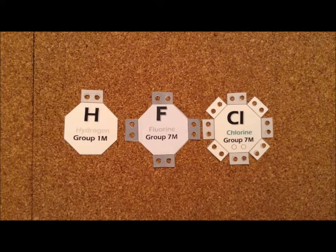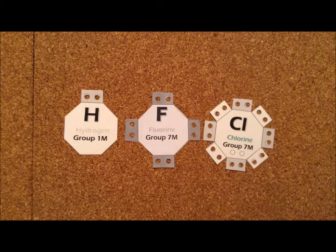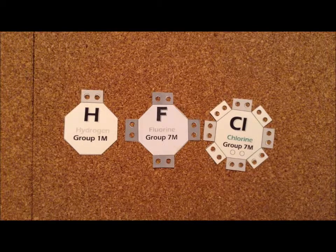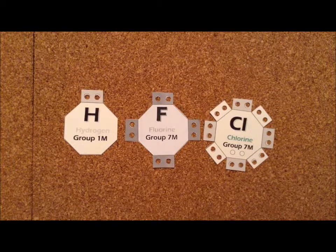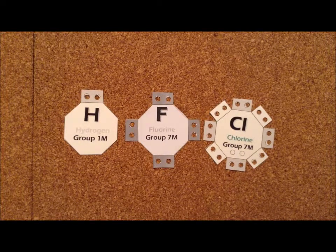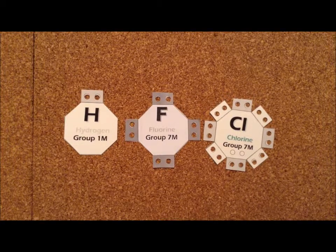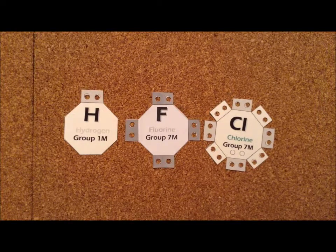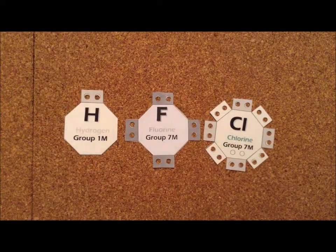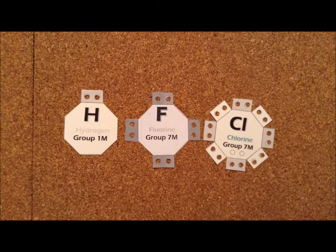Once we get to the n equals 3 and further levels, we have the availability of not only the 3s orbitals and 3p's, but we also have five of the 3d orbitals. Each of those orbitals can hold two electrons. So conceivably, elements in the n equals 3 and below levels can hold up to 18 electrons. We can divide those electrons into two classes. One is the required electrons, and that is the four shaded boxes that will fill up the 3s and 3p orbitals, and those are the orbitals that are most likely to be filled with electrons.